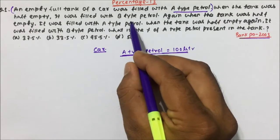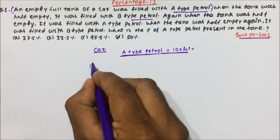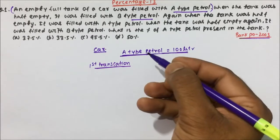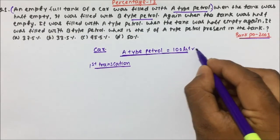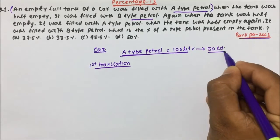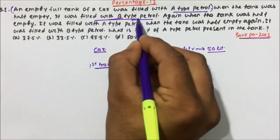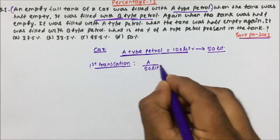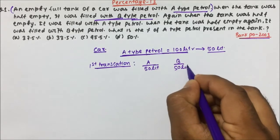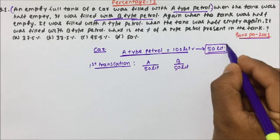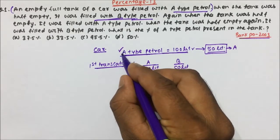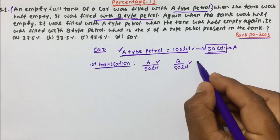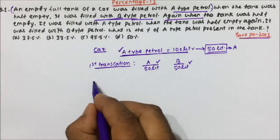We will solve this statement by statement. In the first transaction, when the tank was half empty — that means 50 litres used — it was filled with B-type petrol. So in the car, A-type petrol is 50 litres and B-type petrol is also 50 litres, since the car was initially filled with A-type.